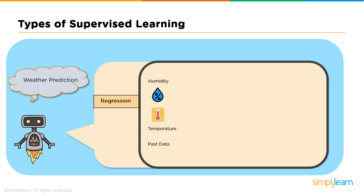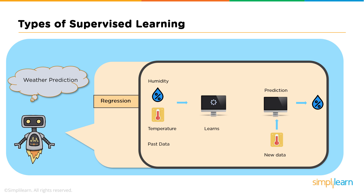Now let's quickly understand regression. Let's say we have two variables — temperature and humidity — where temperature is the independent variable and humidity is the dependent variable, such that as temperature increases, humidity decreases; hence they are correlated. When we feed this data to a regression model, it will understand the relationship between these two variables and how one depends on the other. After the machine is trained, it can easily predict humidity based on a given temperature.